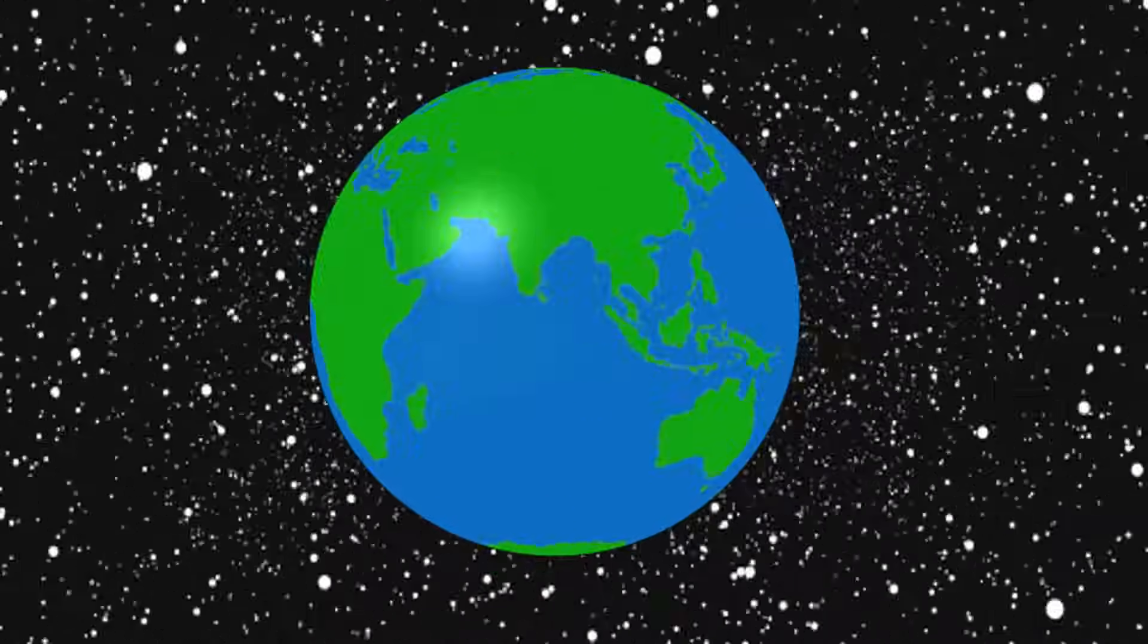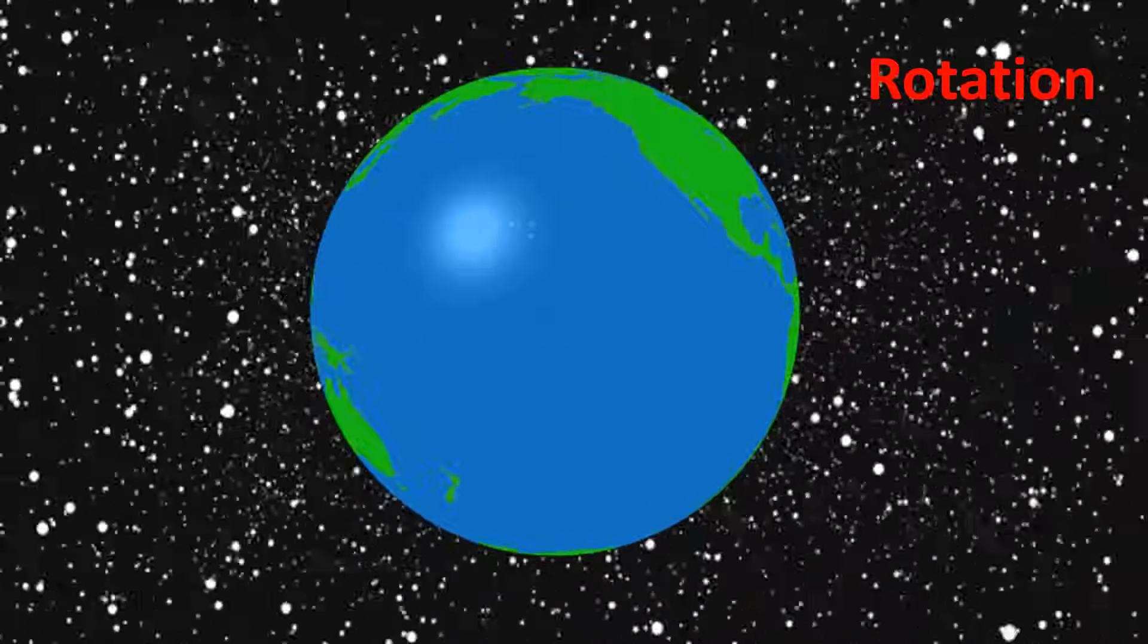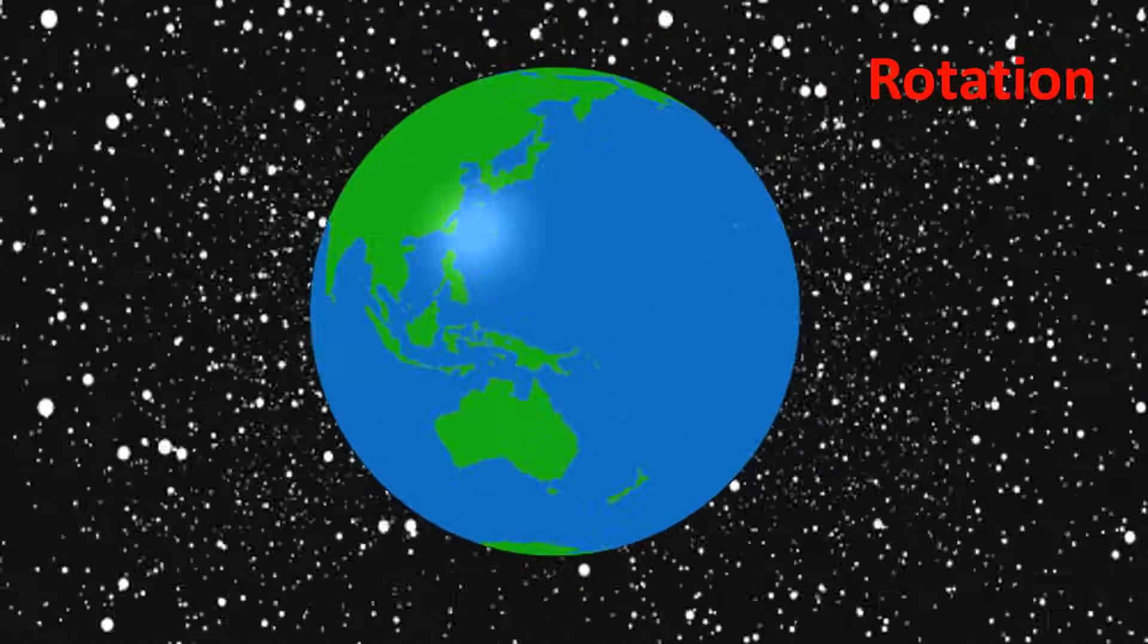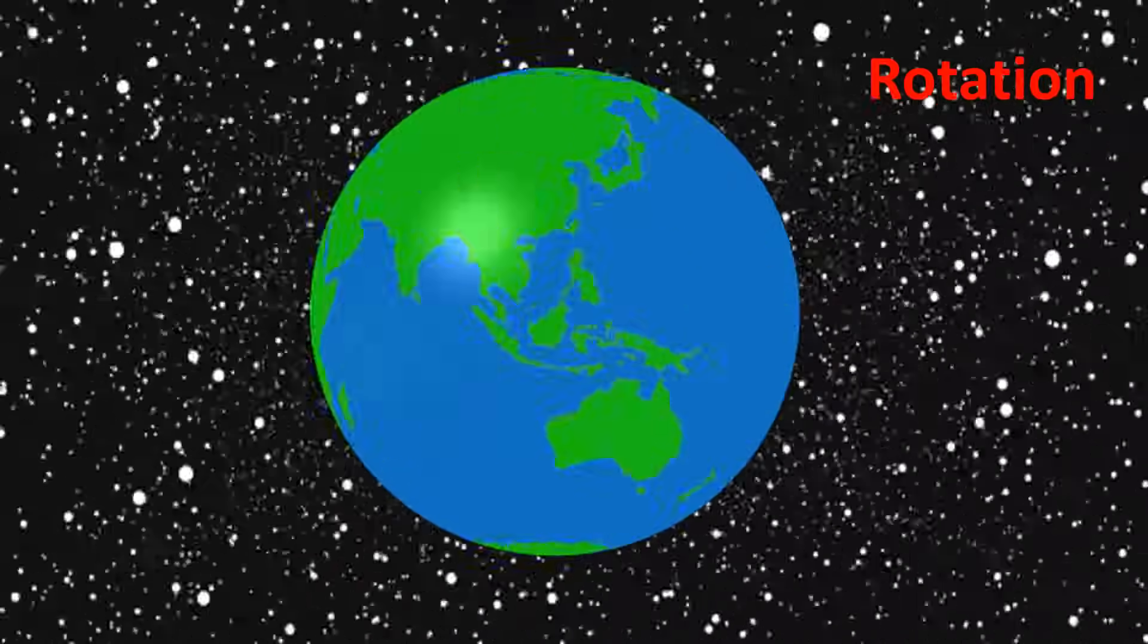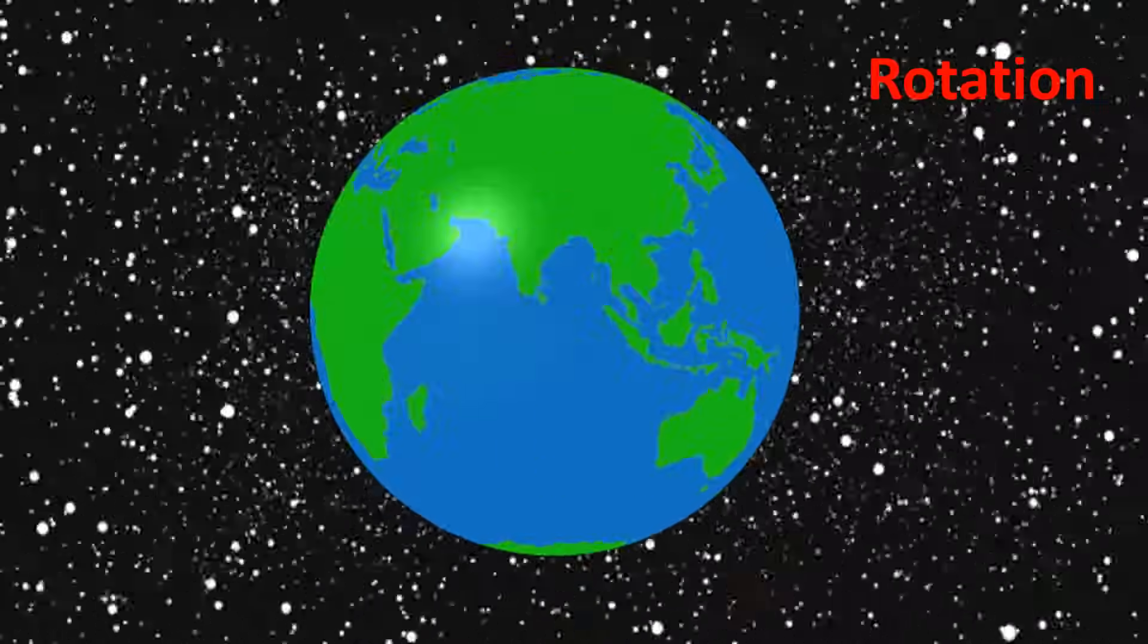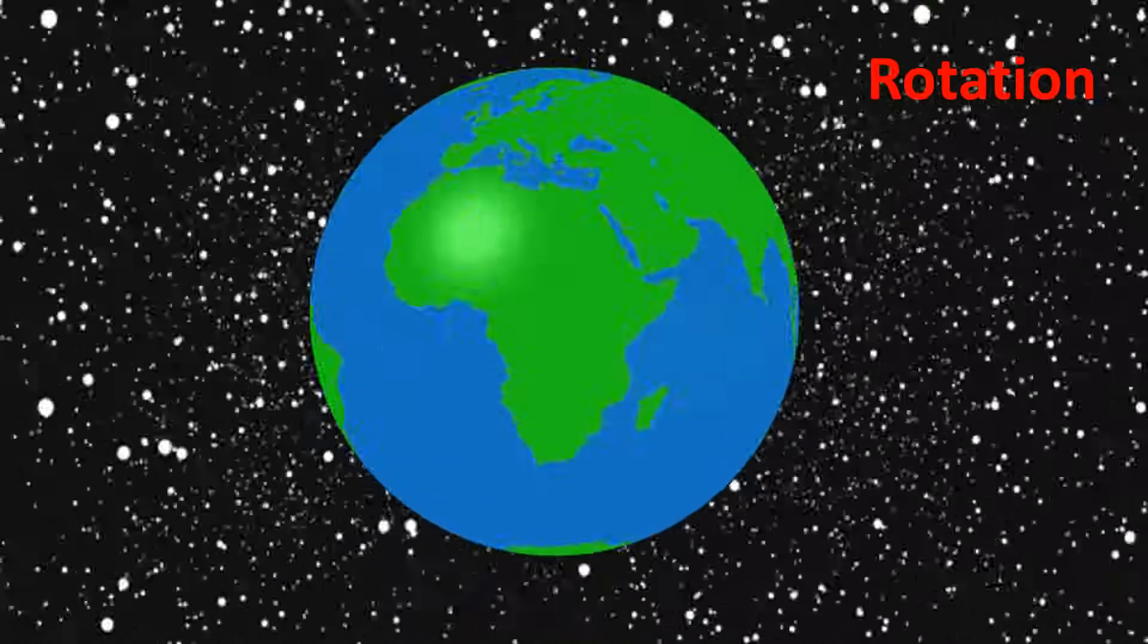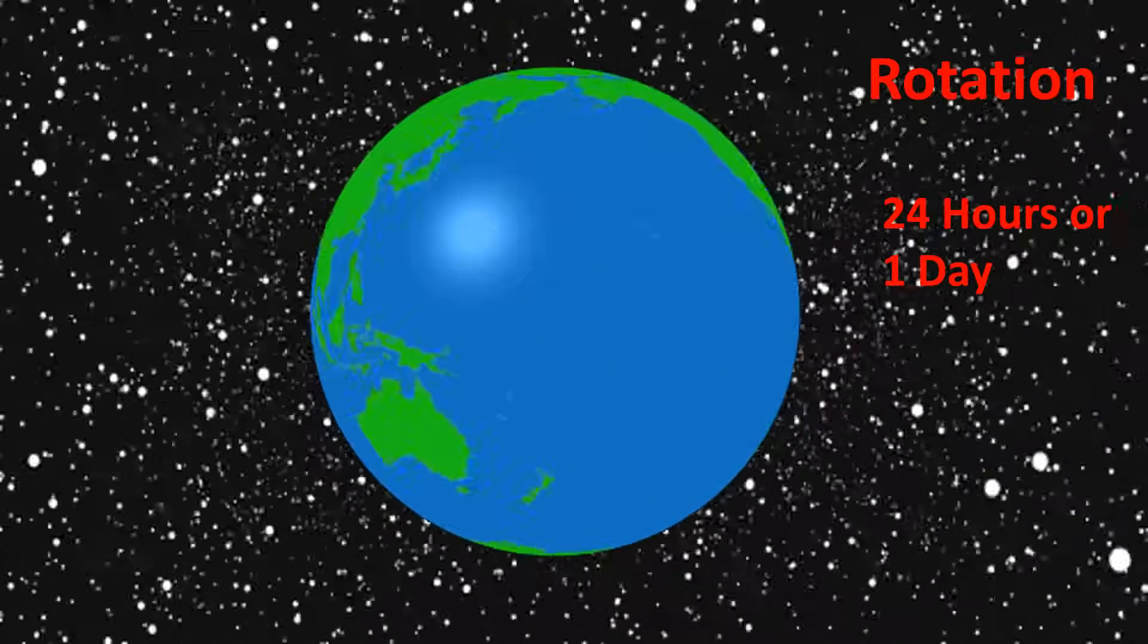The Earth makes two movements. First one is rotation. The spinning of the Earth around itself is called rotation. It takes the Earth about 24 hours, or one day, to make one complete rotation.